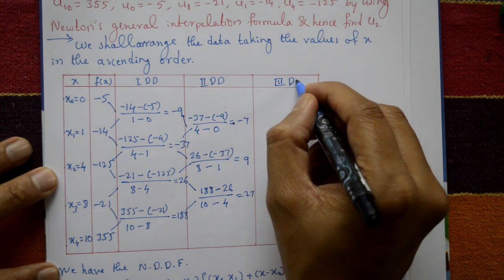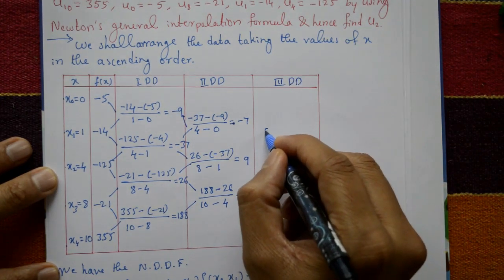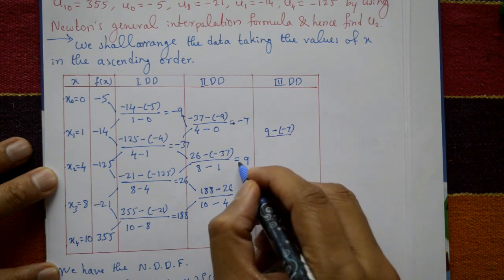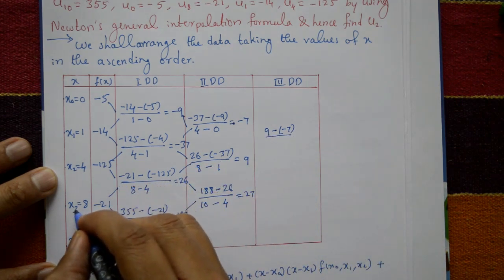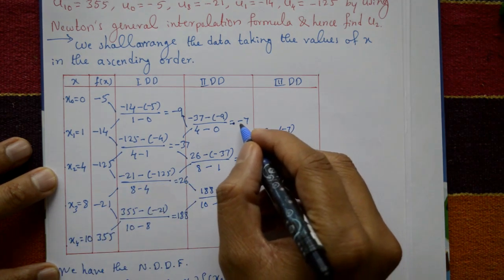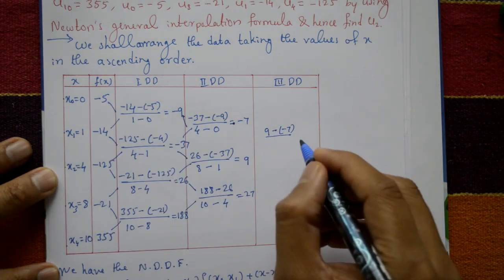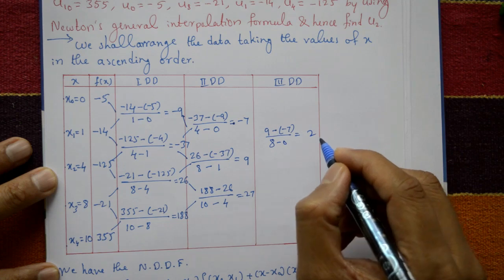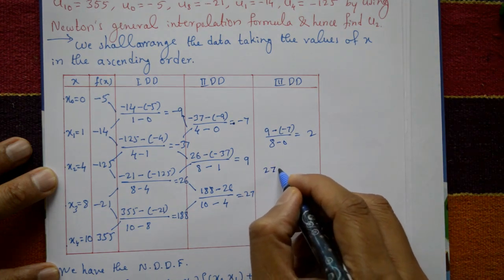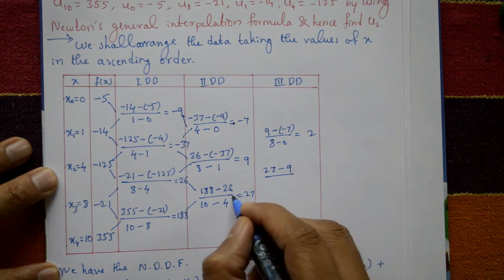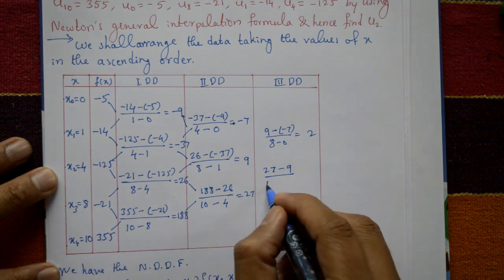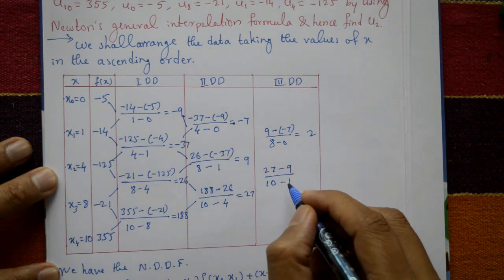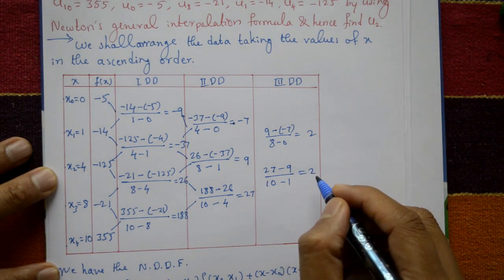Now the third divided differences. F[X0, X1, X2, X3] = (9 - (-7)) / (8 - 0) = 2. F[X1, X2, X3, X4] = (27 - 9) / (10 - 1) = 2.